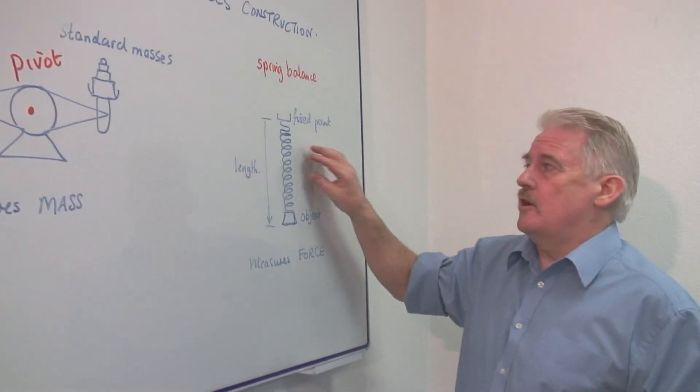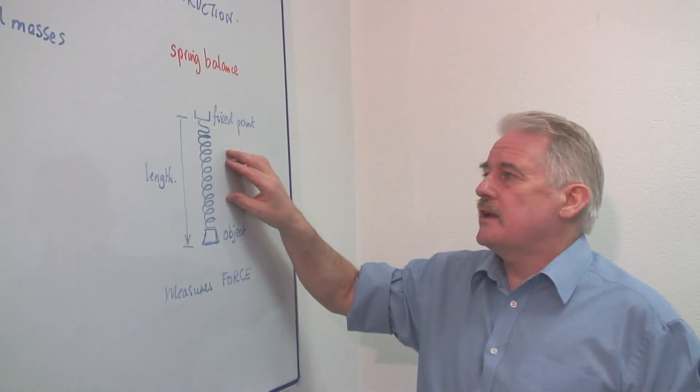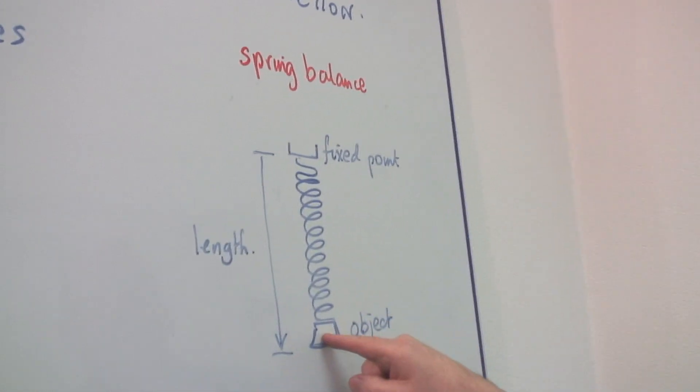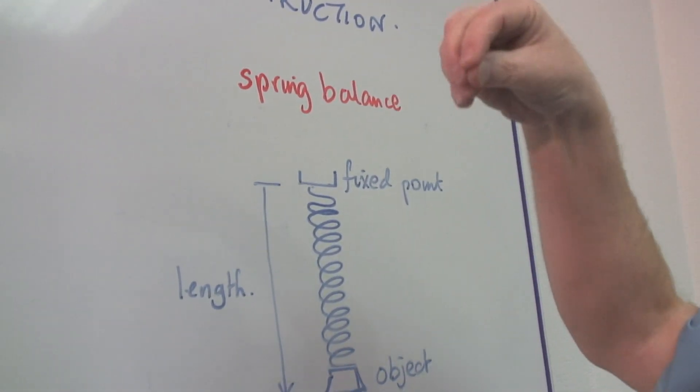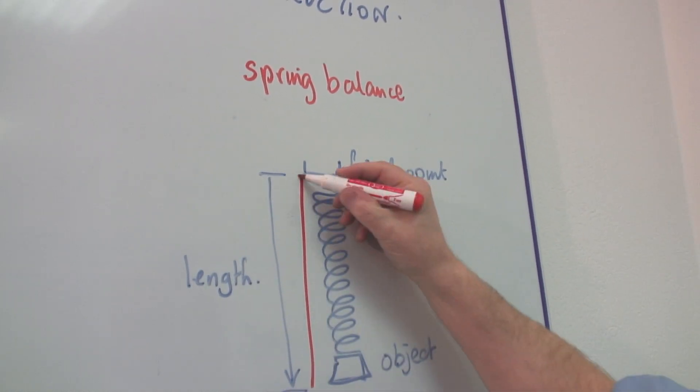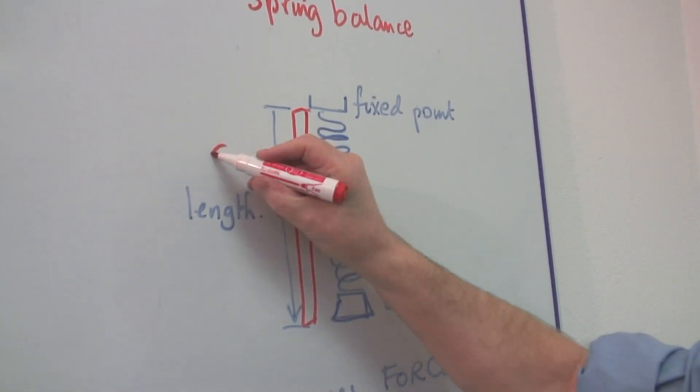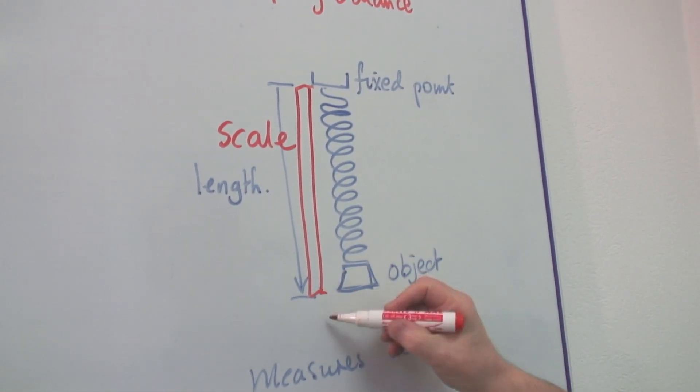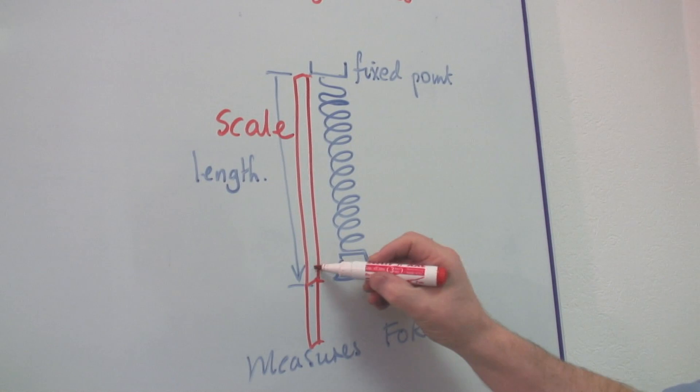This is not. This is a spring balance. What we know is that if we put an object on the end of a spring, the spring gets longer. If we can put a scale down by the side, if we can add a scale to it, then depending on the length, obviously it goes down here,